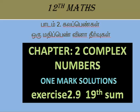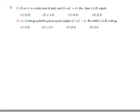The next solution is question 19. Question 19: If ω is a cube root of unity and (1 + ω)^7 equals A + Bω, then (A, B) equals.